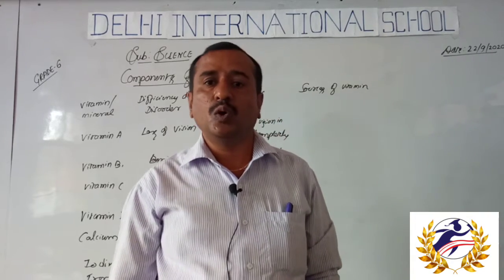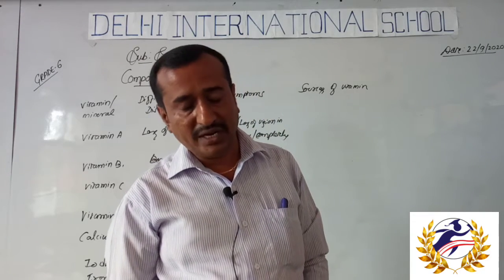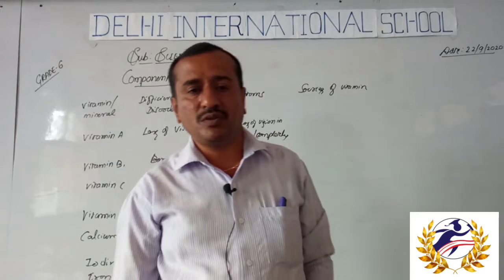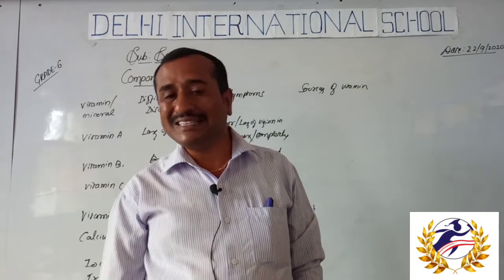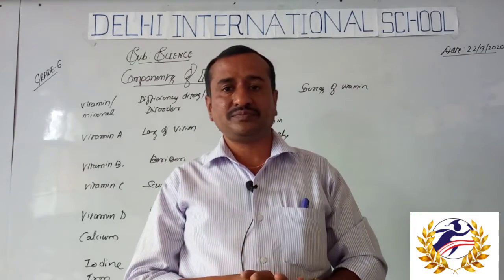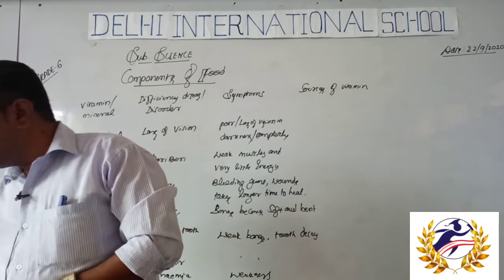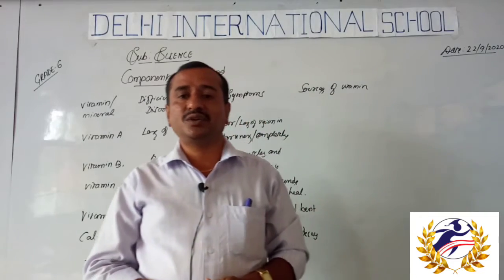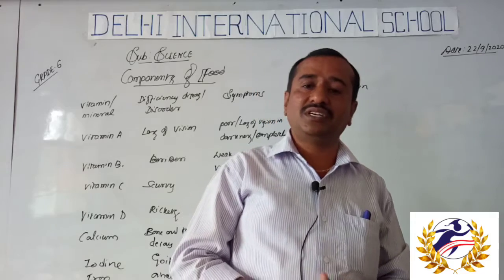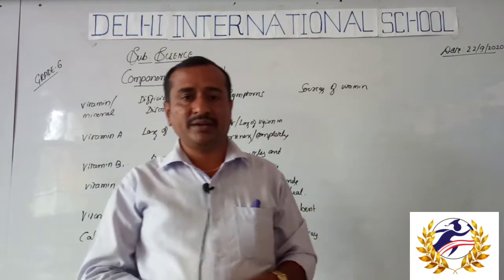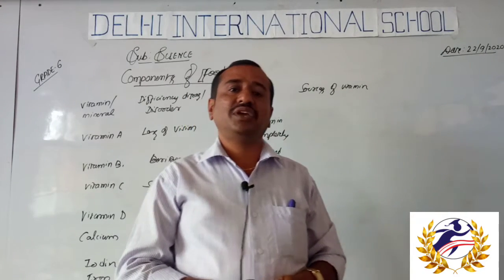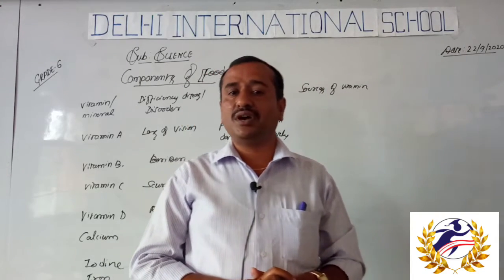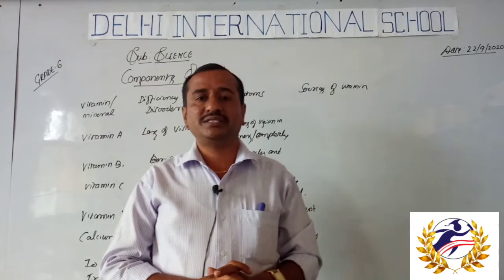A person who is not getting all the nutrients required by the body in a proper proportion — that results in a deficiency or disorder. Those types of diseases are called deficiency disorders. For example, a person who is not eating food which consists of proteins results in stunted growth, swollen face, loss of hair, and discoloration of hair.